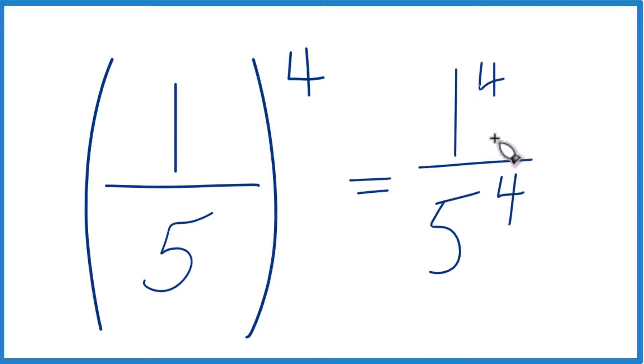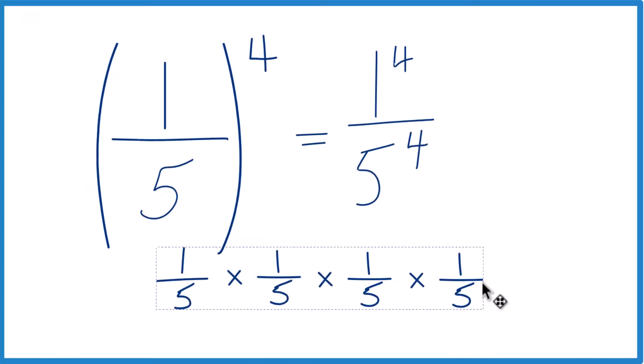Think of it this way. If we took one-fifth times one-fifth times one-fifth times one-fifth, that would give us one-fifth to the fourth power there. Like this here.